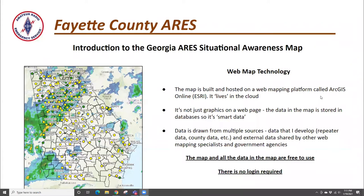So what's the technology that drives the map? It's built and hosted on a web mapping platform called ArcGIS Online. For those who have heard of Esri — they're the company that builds and supports ArcGIS Online. They are the big dog in geographic information systems, the equivalent in GIS to what Microsoft is to operating systems. They own the market. It's a fully cloud-based, web-based mapping platform, not just graphics — most of the data is stored in shape files or relational databases.